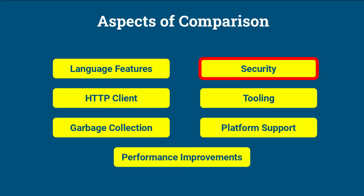Security. Java 8 introduced various security enhancements, including TLS 1.2 support and the ability to disable insecure algorithms. Java 11 continues to improve security, with updates to the security libraries and algorithms.